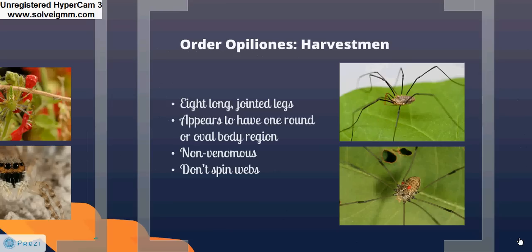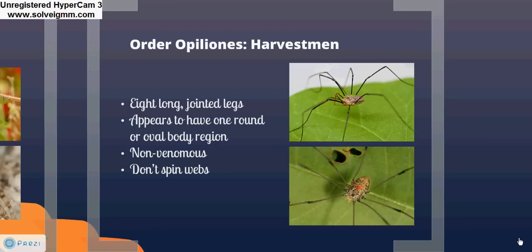The Opiliones, known as harvestmen or daddy longlegs, are commonly confused with spiders. They also have eight legs, but these are long, slender, jointed legs attached to a small oval or circular body. There's a common myth that daddy longlegs are highly venomous but have mouths too small to bite us. In actuality, they are non-venomous and prey on small insects, plants, and fungi.